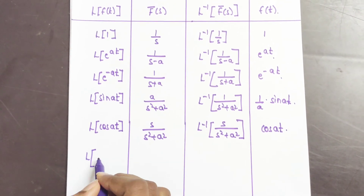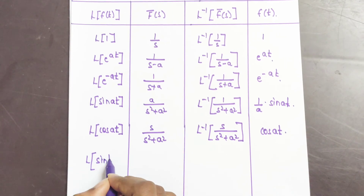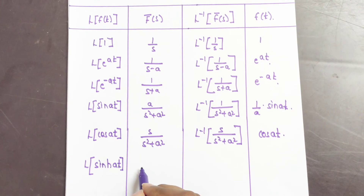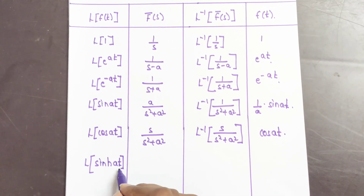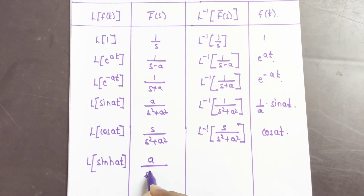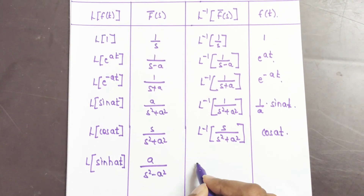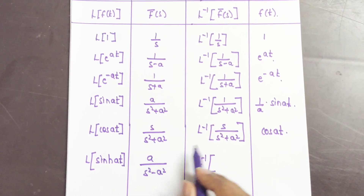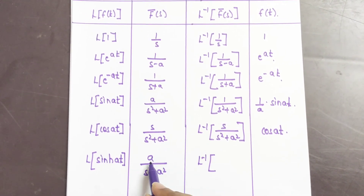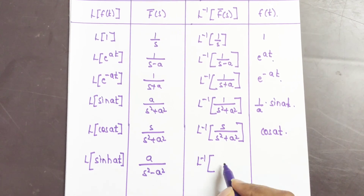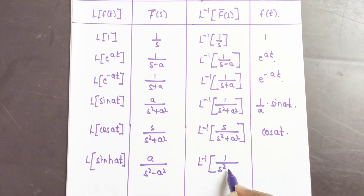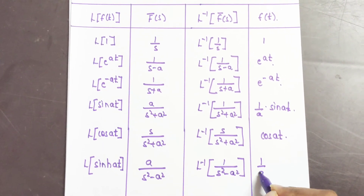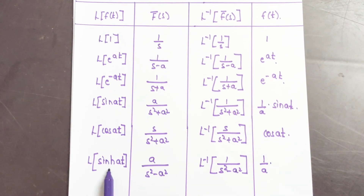The next formula is Laplace of sinh(at). The formula is a/(s² − a²). Here we apply inverse Laplace to the function, taking the constant a aside. Applying inverse Laplace to 1/(s² − a²) gives 1/a, so the answer is (1/a) · f(t), where f(t) = sinh(at).